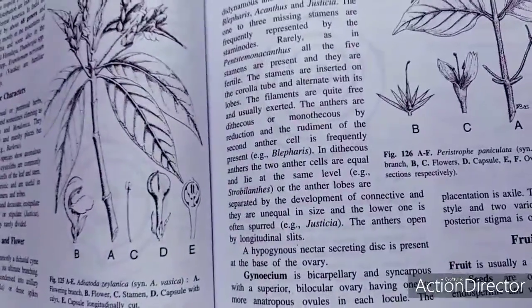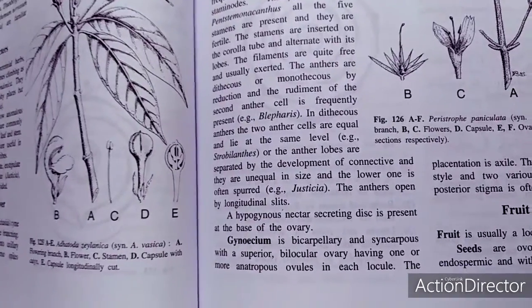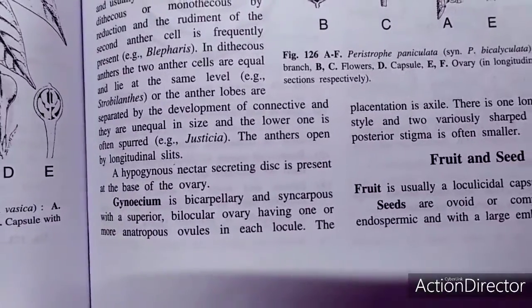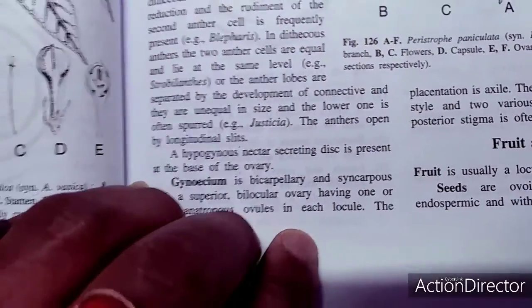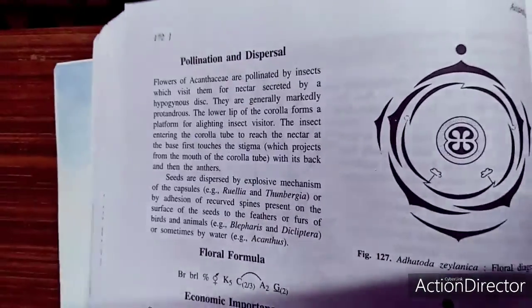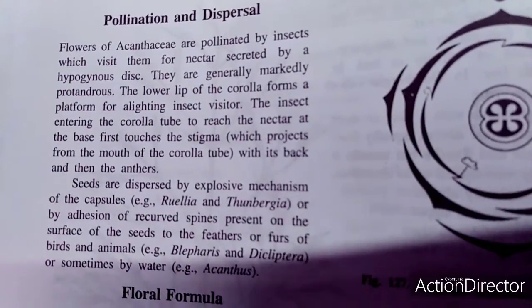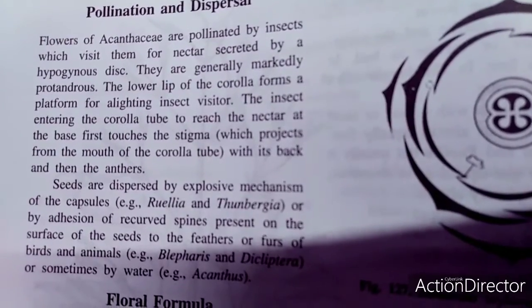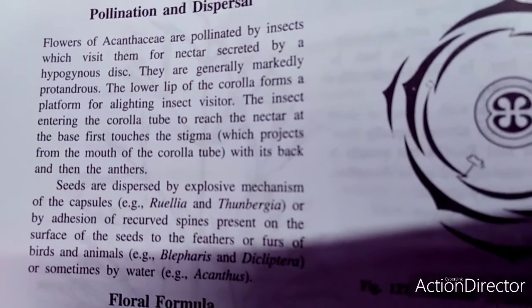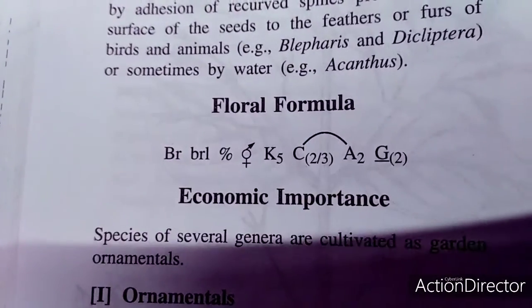The fruit is usually a loculicidal capsule. Seeds are ovoid, compressed, non-endospermic, with a large embryo. This is the floral diagram of Adhatoda. Flowers of Acanthaceae are pollinated by insects, which visit them for nectar secreted by a hypogynous disc. Insect pollination is an important feature of this family.